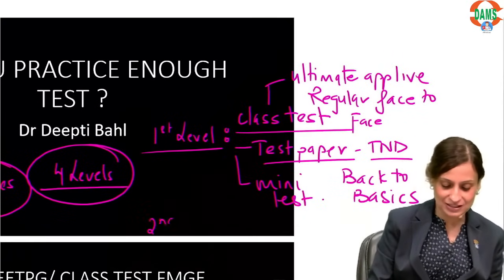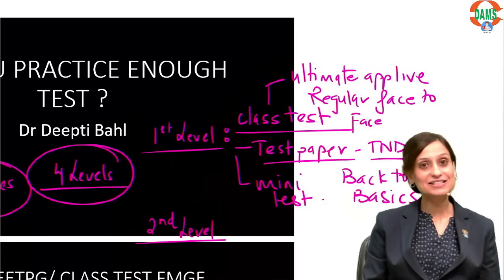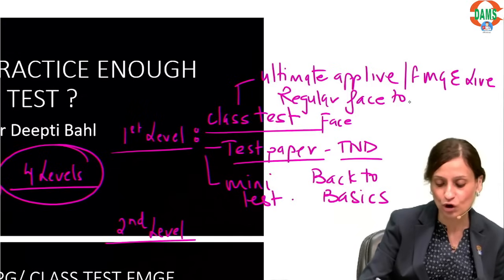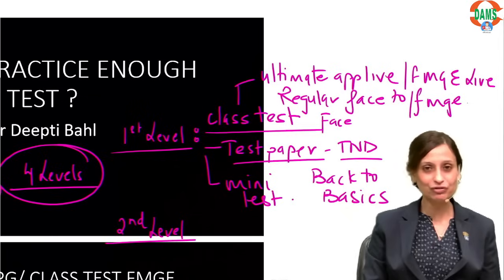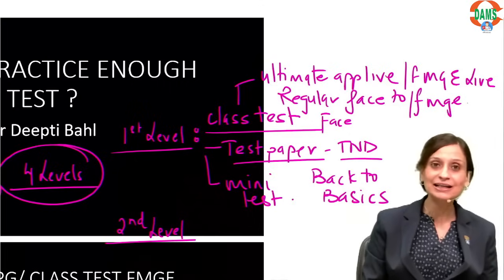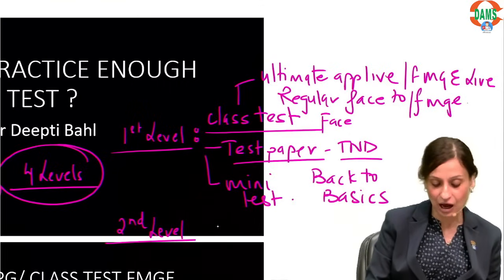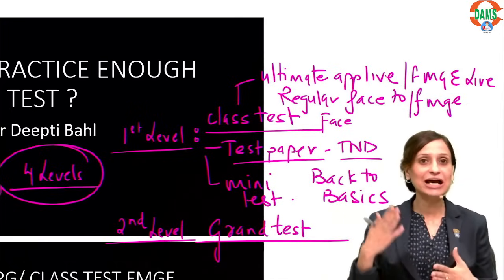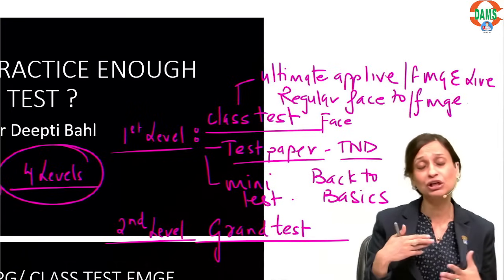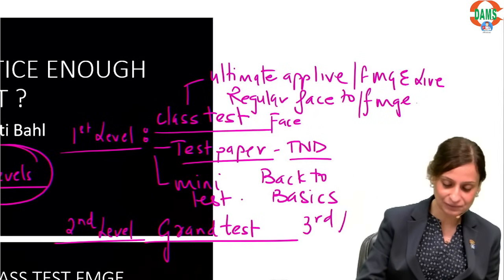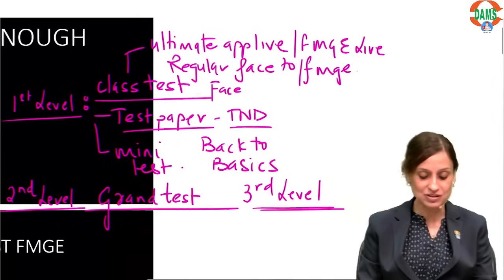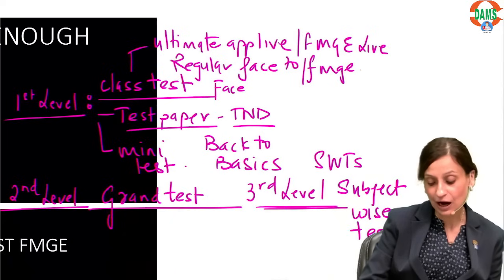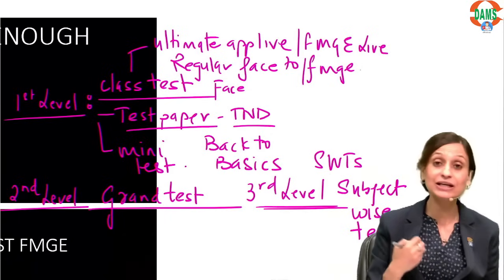The second level of testing at DAMS is called the grand test. I'll explain the differences and at what level of preparation you need each test. Then comes the third level — subject-wise tests, or SWTs. Though class tests are also given subject-wise, SWT papers are different and more extensive. The fourth level includes a series of mock tests and CBTs — computer-based tests given in a real exam scenario at a dedicated national-level testing center.